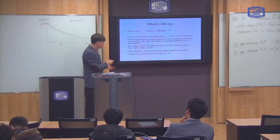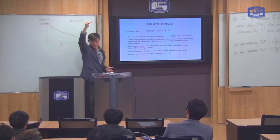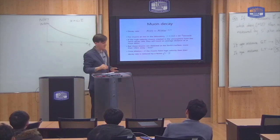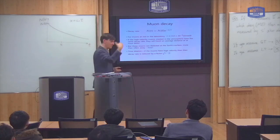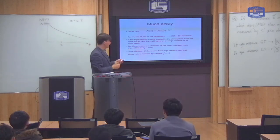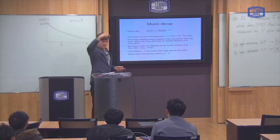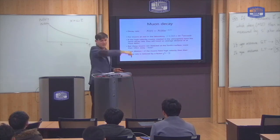However, we can detect these muons on the Earth's surface, which is more than 10 kilometers away from where they were created. So, the reason that's possible is because of the time dilation effect. Because the muons are moving faster, they therefore decay more slowly, and therefore it's possible for them to travel all the way down to the Earth's surface.